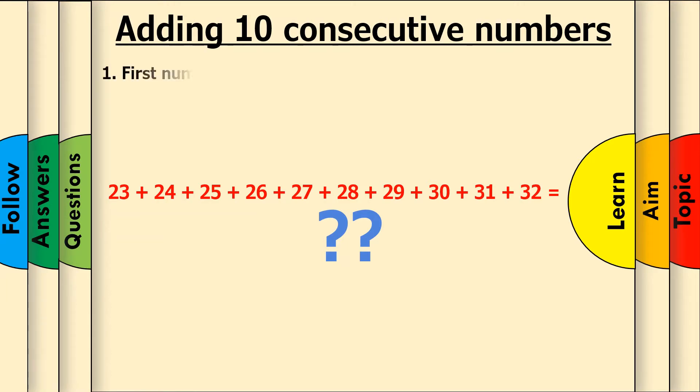First, write down the first number in the addition. Here, we have 23 as our first number, so write this down below. Now, let's add 4 to this. 23 plus 4 equals 27.